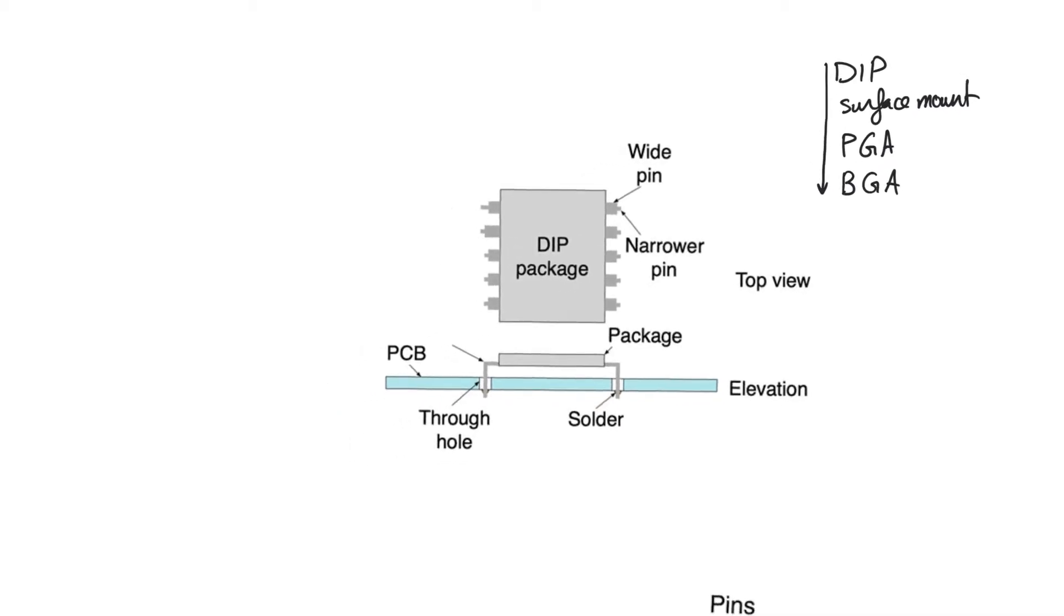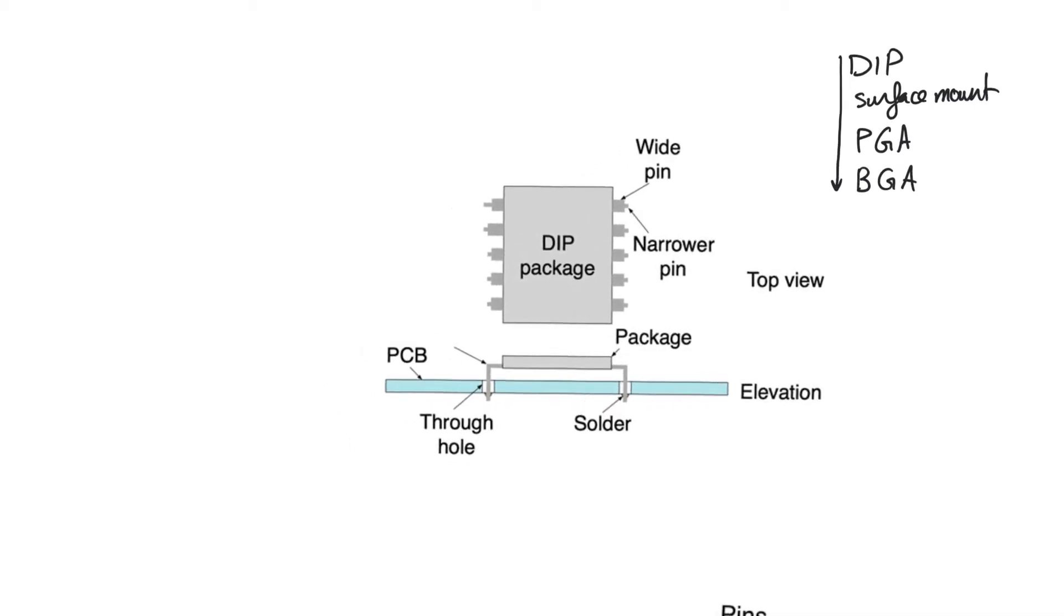Let's start with the simplest package type, the dual inline pin package. This is a package type you're very likely to have seen with very simple chips. In dual inline pins, we have pins arranged in two lines on either side of the package, on the perimeter, usually only on the longer dimension of the rectangle of the package.